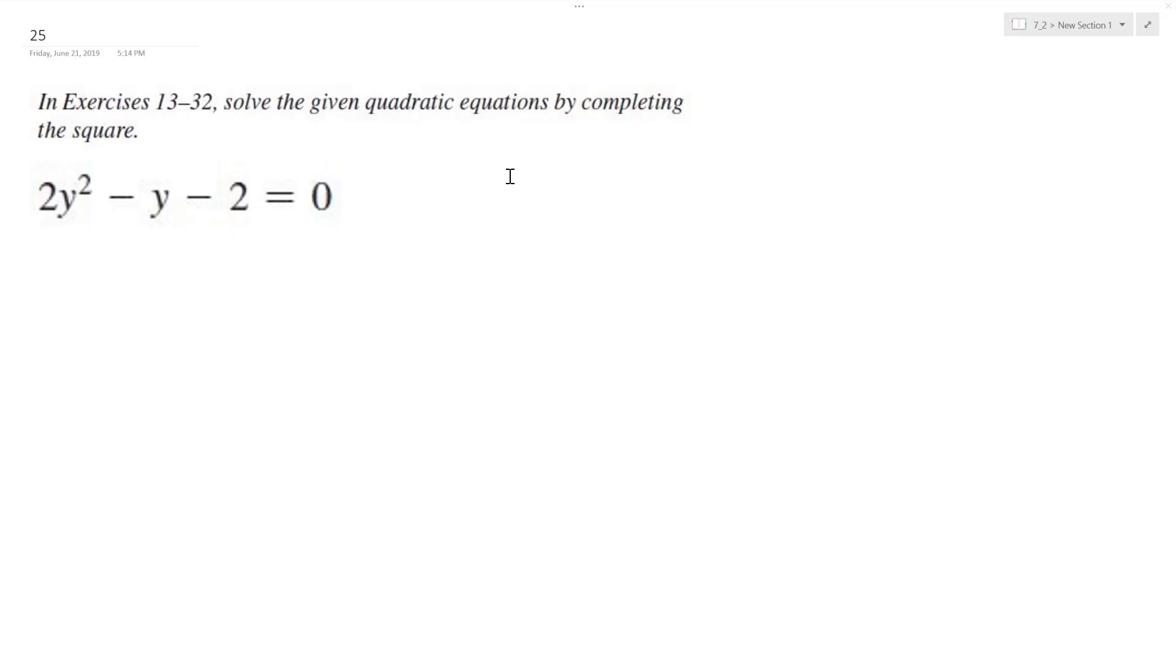Alright, so let's solve the following problem by completing the square. First thing I'm going to do is add 2 to both sides. So we have 2y squared minus y is equal to 2.